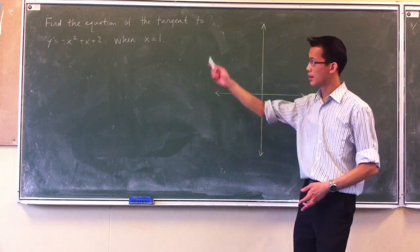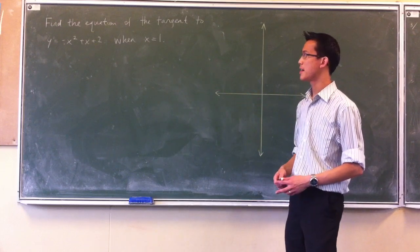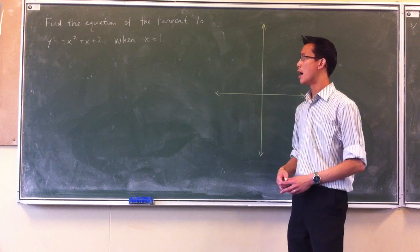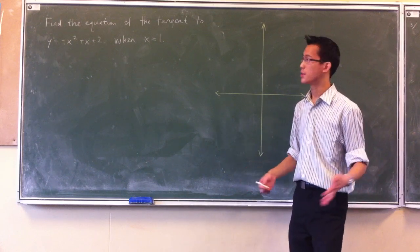Find the equation of the tangent to that curve, y equals minus x squared plus x plus 2, at a particular point when x equals 1. So how do we approach this?